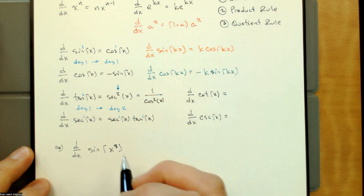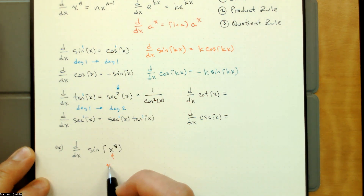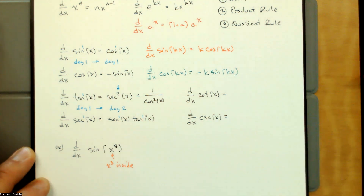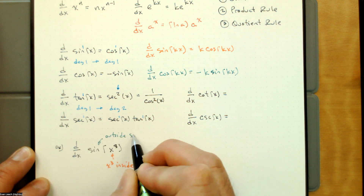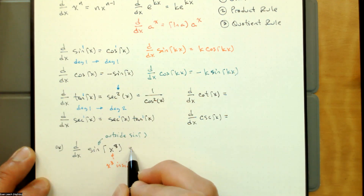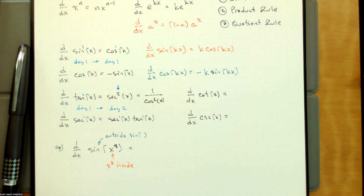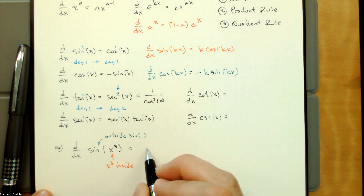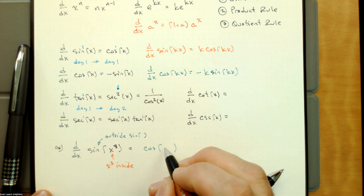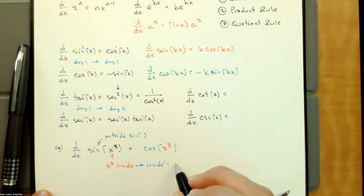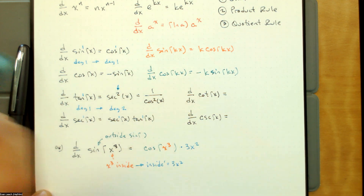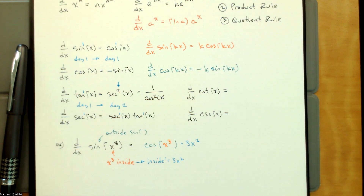So x cubed is the inside, and the outside function is sine of x. Reading this derivative: the derivative of sine of a thing is cosine of that thing times the derivative of that thing. So the derivative of sine of x cubed is cosine of x cubed times the derivative of x cubed, which gives us 3x squared. We'd normally write the 3x squared first.